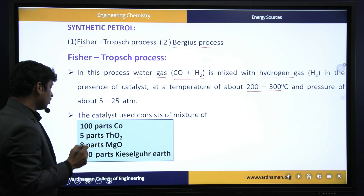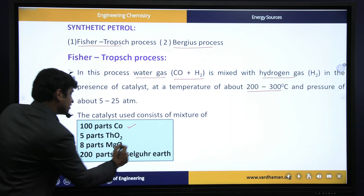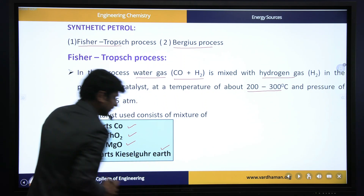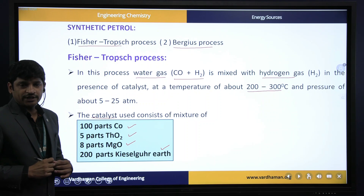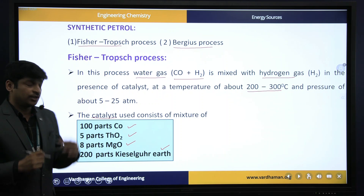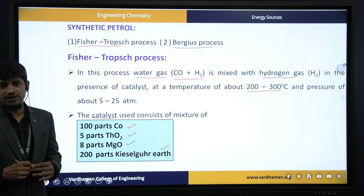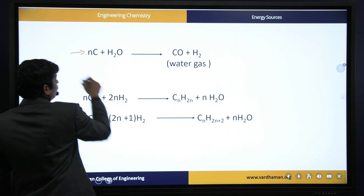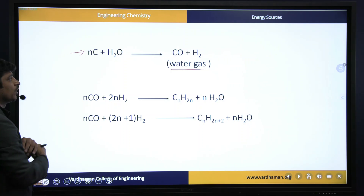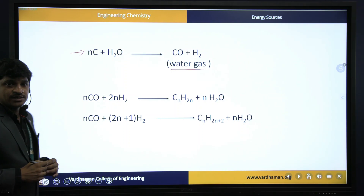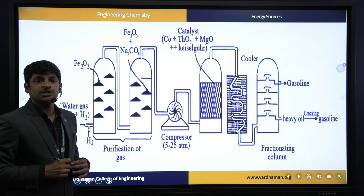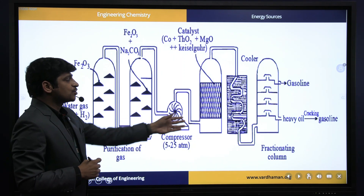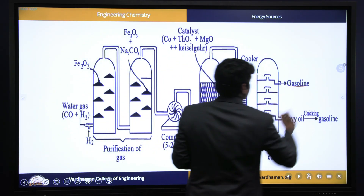The catalyst is a mixture of 100 parts of cobalt, 5 parts of thorium oxide (thoria), 8 parts of magnesia (magnesium oxide), and 200 parts of kieselguhr earth. Water gas is the raw material; the reaction between carbon and water gives water gas (CO + H₂). When these raw materials are taken into the reaction chamber, a polymerization reaction occurs. The water gas reacts with hydrogen, leading to the formation of fractions from which gasoline is collected.